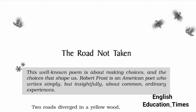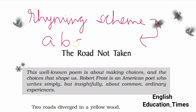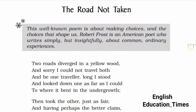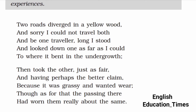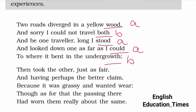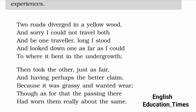This poem consists of four stanzas with five lines in each stanza. The rhyming scheme of the poem is A B A A B. We can identify this because in the first line we have 'would' (A), then 'both' (B), then 'stood' (A), then 'could' (A), and then 'growth' (B) — so the pattern is A B A A B throughout the poem.